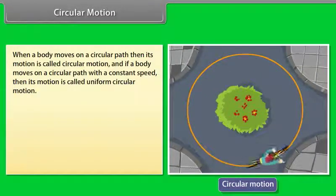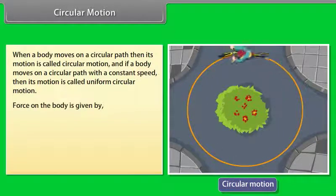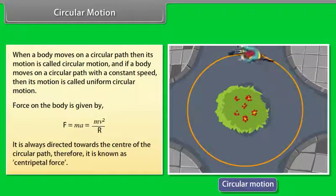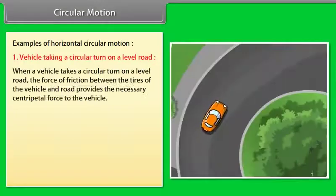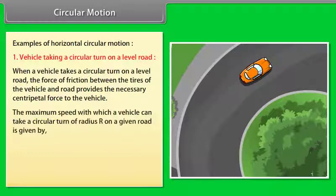When a body moves on a circular path its motion is called circular motion, and if it moves with constant speed it is called uniform circular motion. The force on the body is given by F = MA = MV²/R. It is always directed towards the center of the circular path, and is therefore known as centripetal force. For a vehicle taking a circular turn on a level road, the friction between the tires and road provides the necessary centripetal force. The maximum speed is given by V = √(μRg).